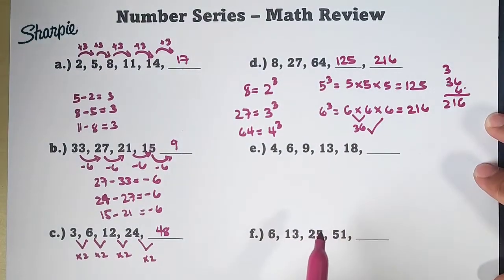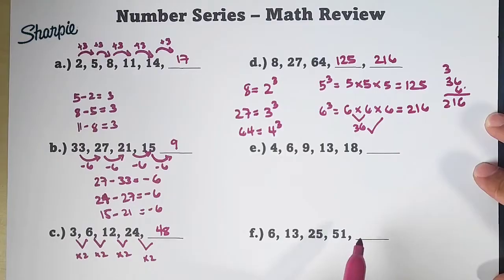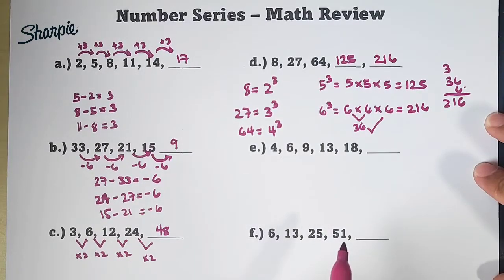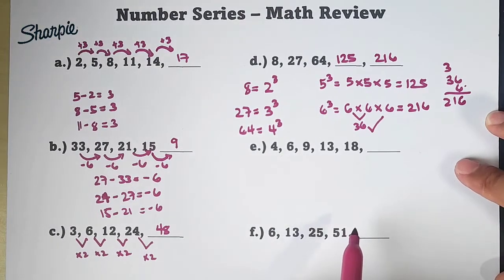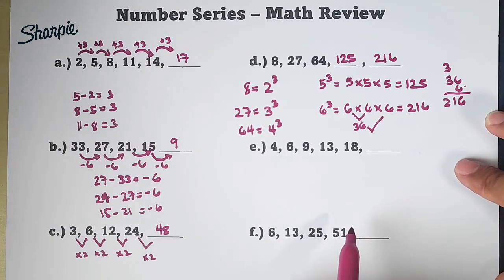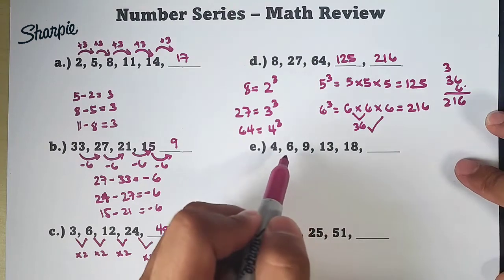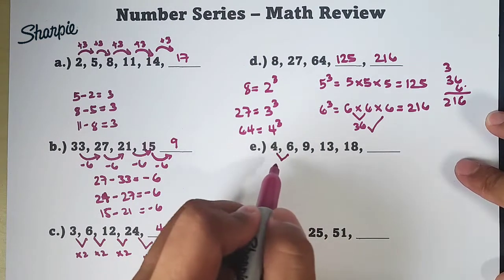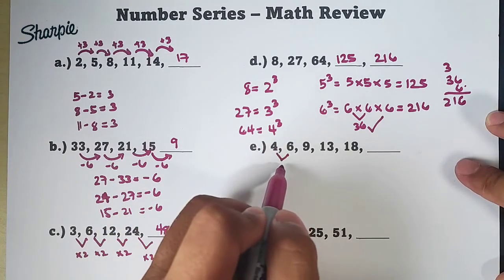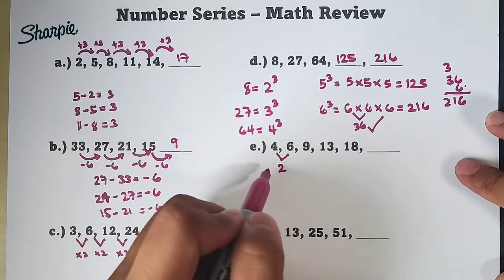Now, let's move on with letter E. For letter E, 4, 6, 9, 13, 18. So, sir, paano po yung pattern? Yan, parang hindi po siya times 2. Hindi po rin siya perfect cube. Tapos, hindi rin po consistent. So, tingnan natin. Para makapunta tayo from 4 to 6, siya ay 2. Mag-add tayo ng 2. Plus 2.